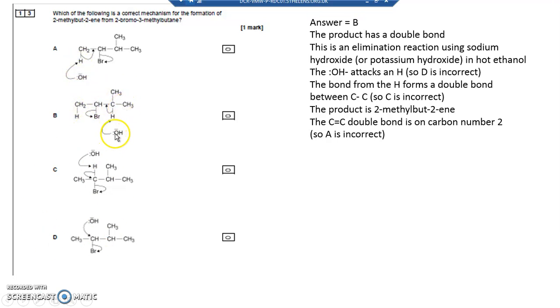Let's have a look at A and B then. Going for an H, so the OH- attacking an H, the electrons from the H going between the C and the Br being released. That looks very promising. And the OH- reacting with the H, the bond going between the two Cs and the Br being released, and that's a perfectly good mechanism as well.